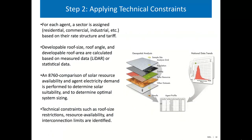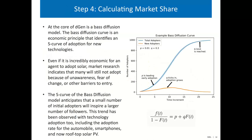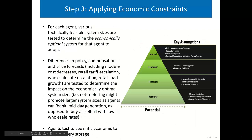The second step is applying technical constraints. For each agent we look at their sector and rooftop, narrowing down from the overall total availability to how much could reasonably be developed from a technical perspective. We use 8,760 solar data and apply constraints such as rooftop size, any interconnection limits posed by the utility, and how angle and aspect affect the technical potential and generation of the system.